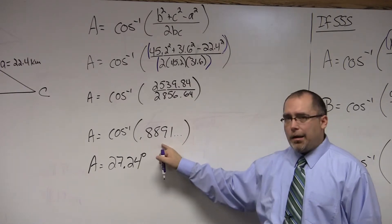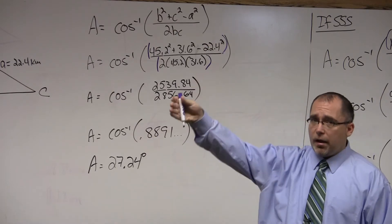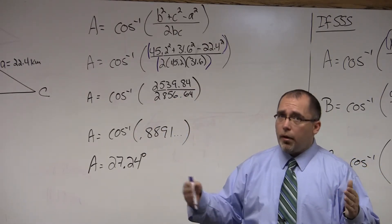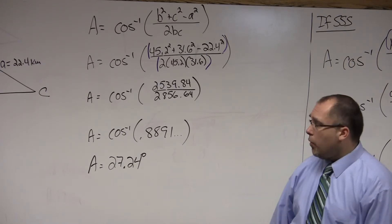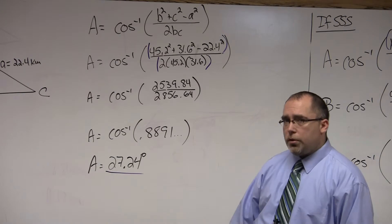Divide those two numbers, you end up with 0.8891. Just like the law of cosines, whatever this decimal is, it should always be between negative 1 and positive 1. So, you can have a negative decimal, as long as it's greater than negative 1 but less than positive 1. Inverse cosine that, you end up with 27.24 degrees.